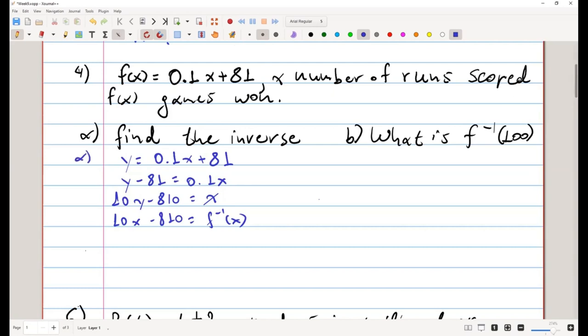For part b, first of all, let's do the calculation. f inverse of 100, that is 10 times 100 minus 810. This gives us 1000 minus 810, which is 190. Now let's see.